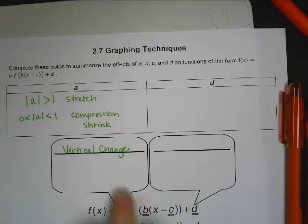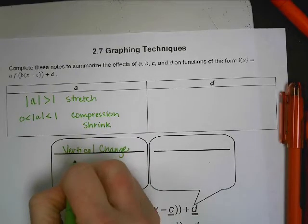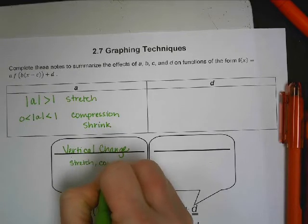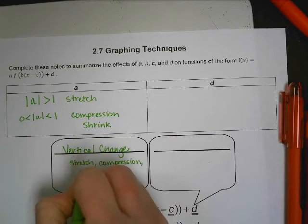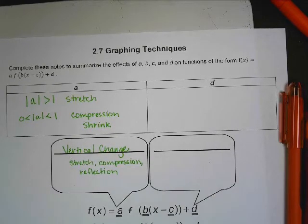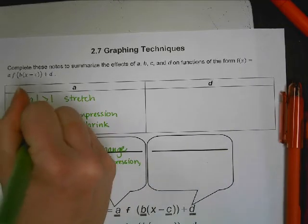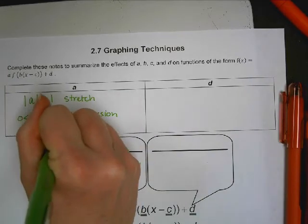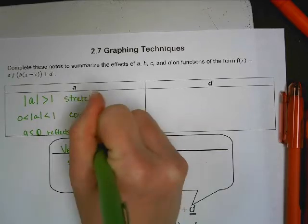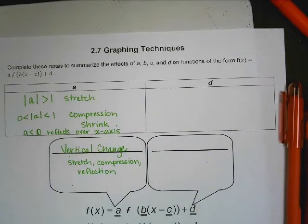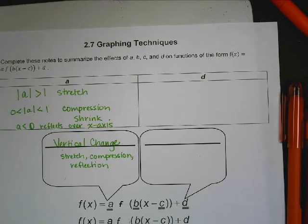Now the reason that I just said vertical change over here is because there's one other change that can happen. It can be a stretch, a compression, or a reflection. And so if A is less than zero, it's a reflection over the x-axis. Don't let those words bother you. That's a vertical change. If something goes from being above the x-axis to being below the x-axis, that means it changed vertically.